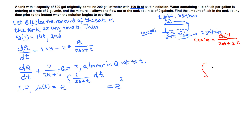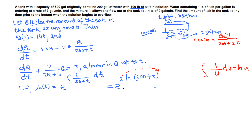When the derivative of the denominator appears in the numerator, the integral is the natural log of that expression. So we get 2 · ln(200 + t) — no absolute value needed since time is positive. By the power property of logarithms, the 2 moves as an exponent, and since e and ln cancel, the integrating factor is (200 + t)².